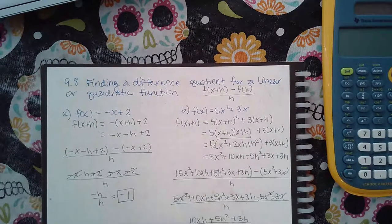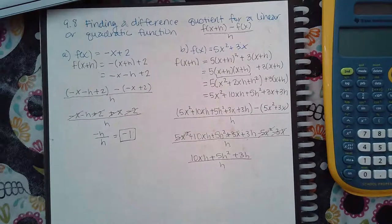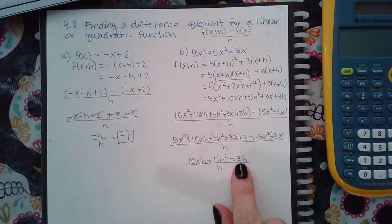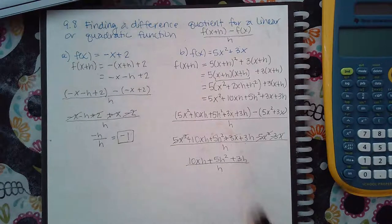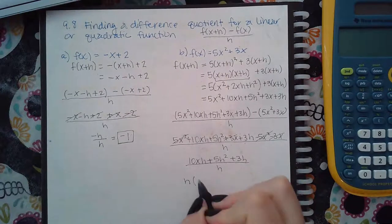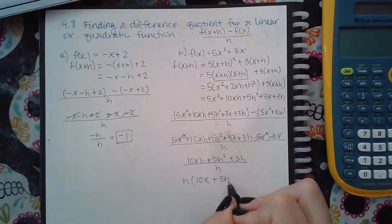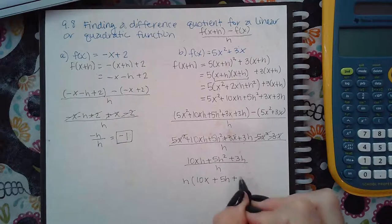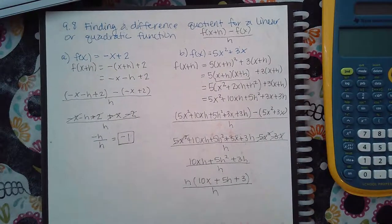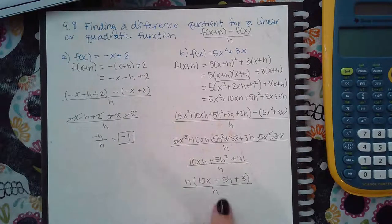And I still have the h in the denominator that I need to simplify. So what I do notice is that every single term that is left over does have an h in it. So what I'm going to do is I'm going to factor that h out. So if I factor the h out, I have 10x here. If I factor 1h out, I still have an h. And if I factor that h out, I just have plus 3. Then the h that I factored out and the h in the denominator can reduce or cancel.